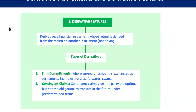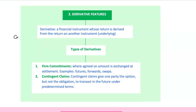The buyer of a derivative takes what's called a long position, meaning they're betting on the underlying asset increasing in value, while the seller holds a short position, betting it will fall. Whether it's a forward contract, option, or swap, the size of the contract, called the notional principle, is agreed upon upfront. And in some cases, we see embedded derivatives, like in callable bonds, where a derivative feature is part of another financial instrument.